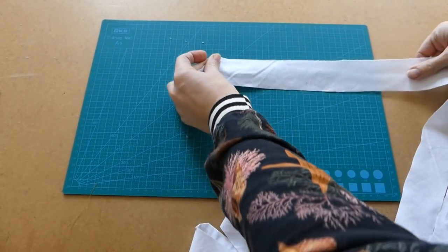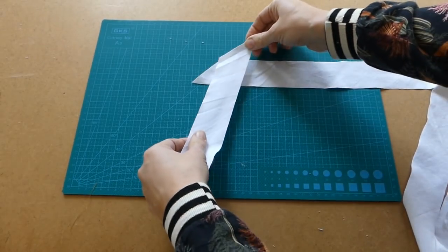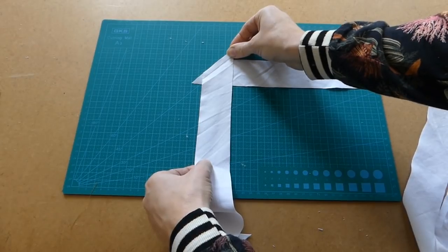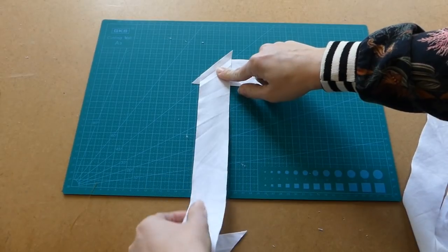Now we're going to sew all of them together and pull through the bias tape maker. You have to put your strips in a 90 degree angle, right sides together, and let each strip overhang about a quarter of an inch because we're going to sew with a quarter of an inch seam allowance.